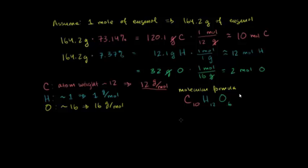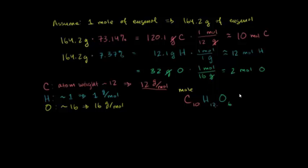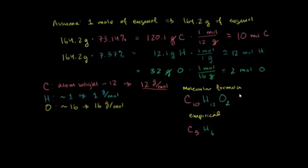The empirical formula is this ratio reduced to its simplest terms. All of these numbers share a common factor of 2, so we divide each by 2. That gives us 5 carbons, 6 hydrogens, and 1 oxygen. So the empirical formula is C5H6O.